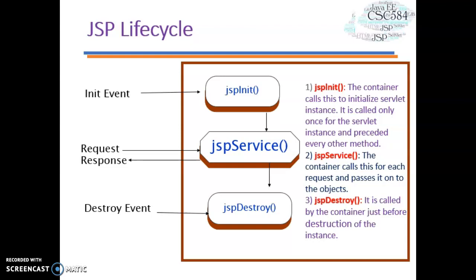When the request and response are invoked by the browser, the JSP service method will be called. The container calls this JSP service method for each request and passes it to the objects that are related. Finally, when the destroyed event happens, this method will be called by the container just before the destruction of the instance.